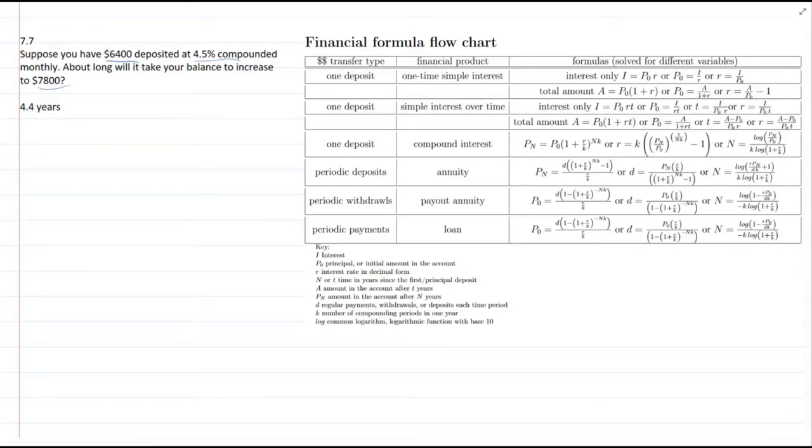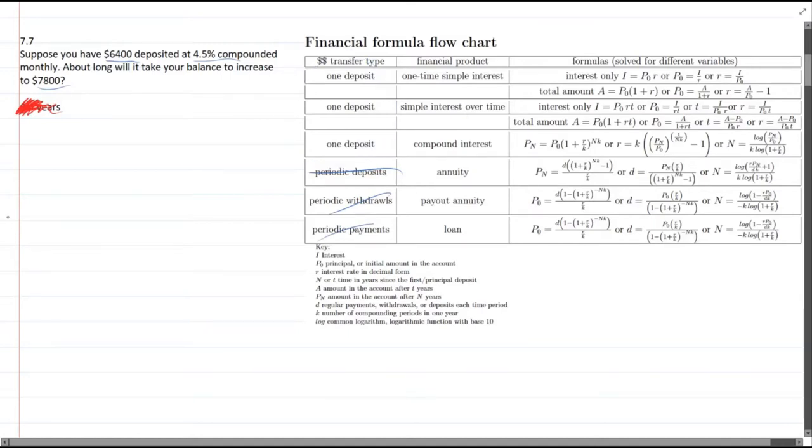So I do already have the answer here. We'll try to pretend like we didn't see it. That's a check at the end. First thing, what row are we on? Well, we do not have periodic deposits. We definitely don't have withdrawals. Nothing periodic. So we have one deposit, so it's one of these three. Now, which one is it? Well, we have compound interest, so it's not simple. So this first two rows are out. It's not simple interest, it's compound interest. So these next two rows are out. So we know right away we are in this third row here.